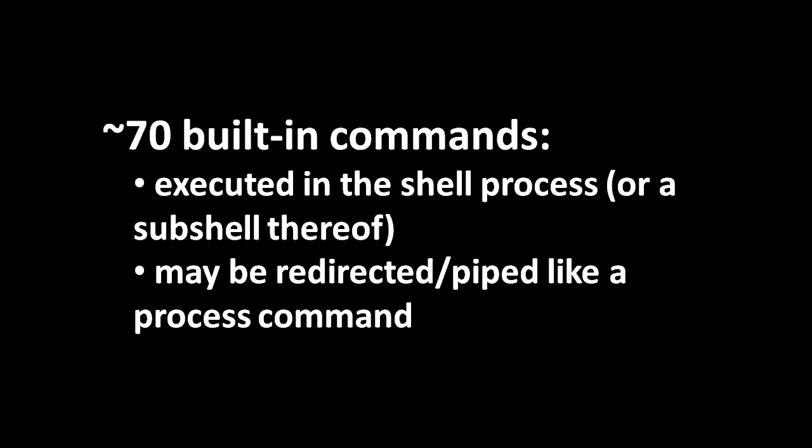So far we've discussed process commands — commands which are actually executable programs. There's another kind called a built-in command, which is implemented in the shell itself. When we execute a built-in command it runs its code in the shell process itself with no spawned process. There is something called a subshell, which is essentially a fork of the process, and sometimes a built-in command runs in a fork of the shell rather than the main shell process. Built-in commands still allow for redirection and piping — when redirected, the shell arranges things so each built-in command is given a duplicate of the standard in and standard out file descriptors, and only that duplicate is redirected, so it doesn't affect any other commands.